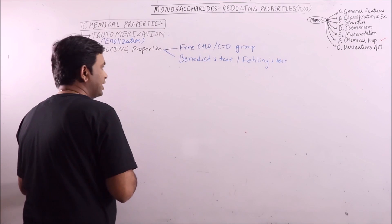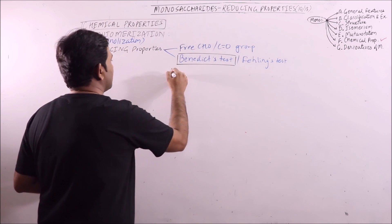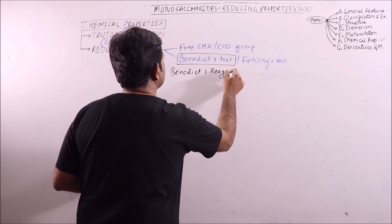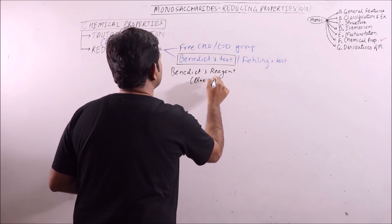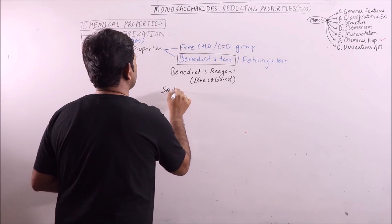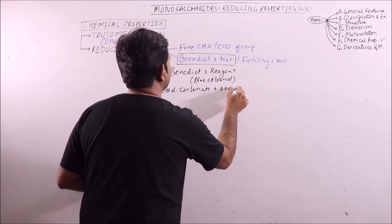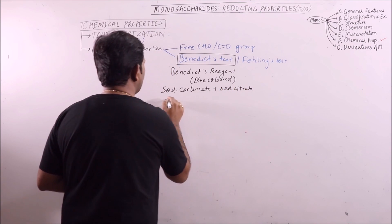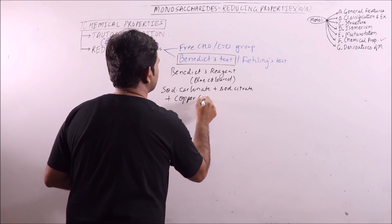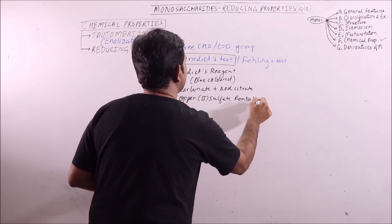Now, we will take the Benedict's test in discussion. Benedict's reagent is blue colored and it is having sodium carbonate, sodium citrate and copper sulphate pentahydrate.